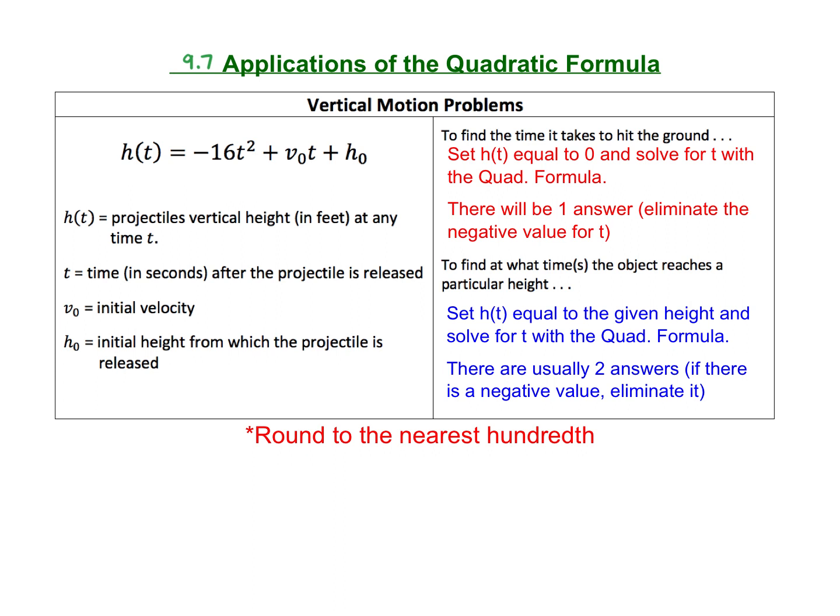Where h(t) represents the vertical height at any time t, v sub 0 is the initial velocity, and h sub 0 is the initial height from which the projectile was released.